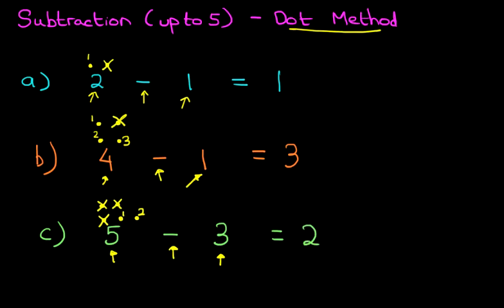So we have crossed out 3 dots because we are taking away 3. How many dots does that leave? 1, 2. So that leaves 2 dots, and that is our answer: 5 minus 3 equals 2.